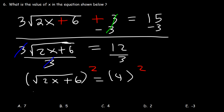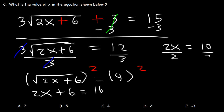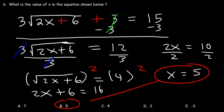On the left side, all we have is 2x plus 6. On the right side, 4 squared is 4 times 4, that's 16. Now if we subtract both sides by 6, 16 minus 6 is 10. And if we divide both by 2, x is equal to 5. Answer choice B is the right answer.